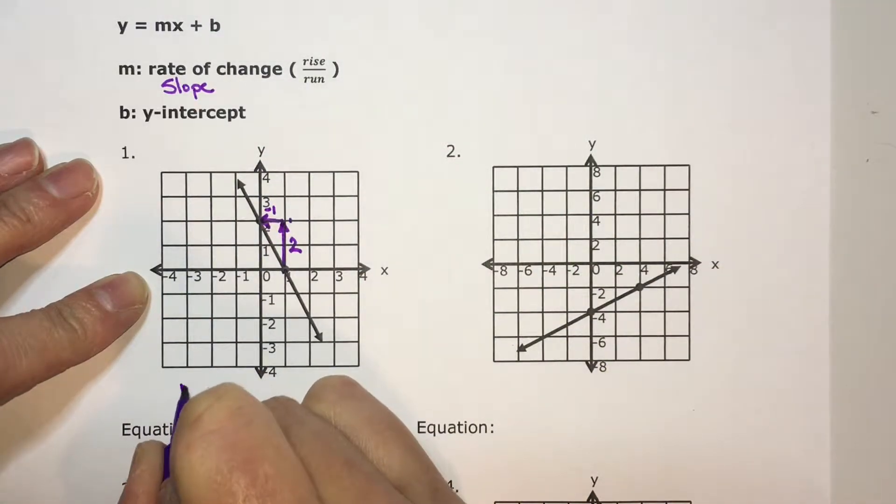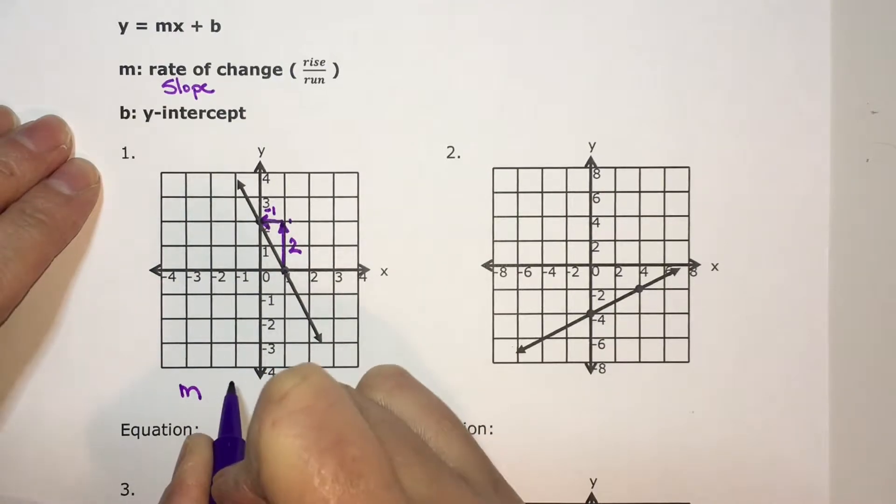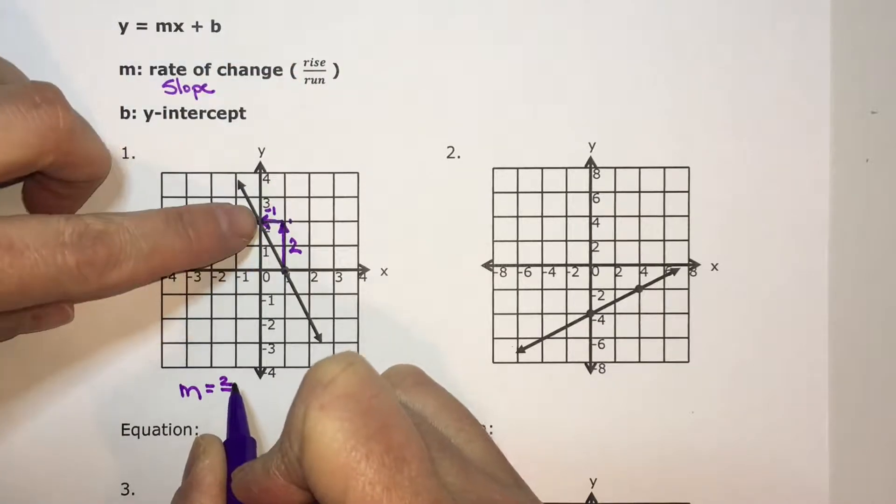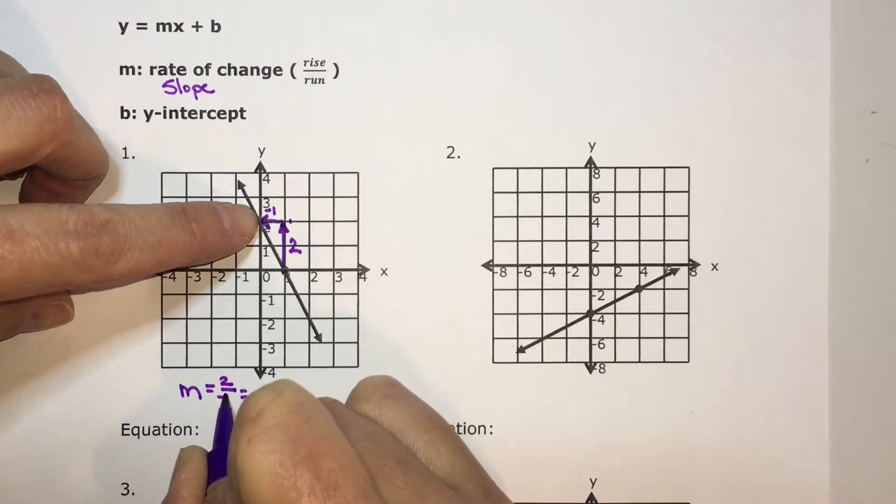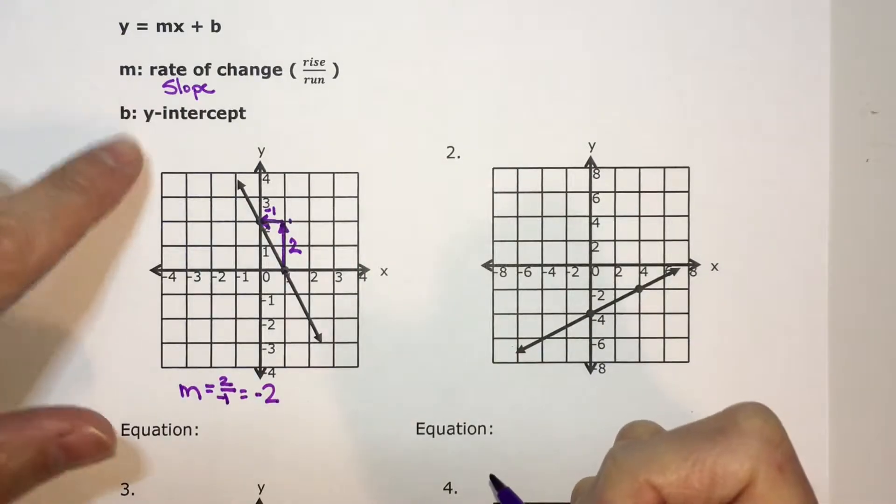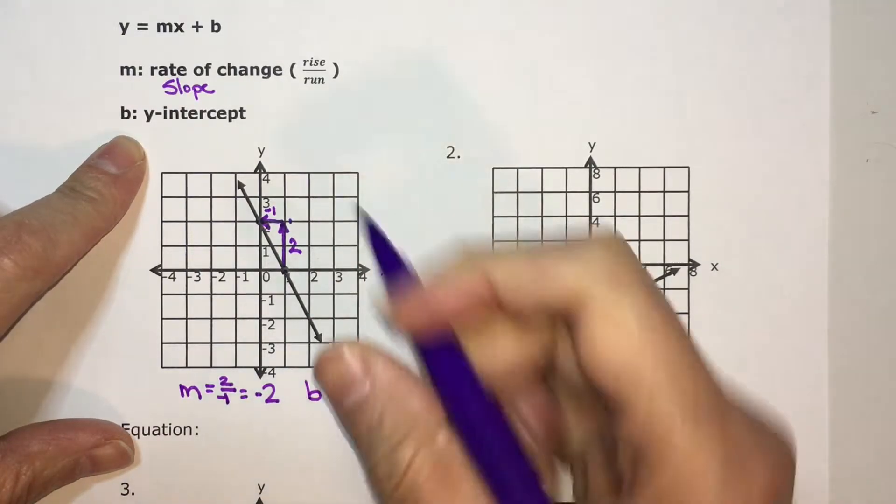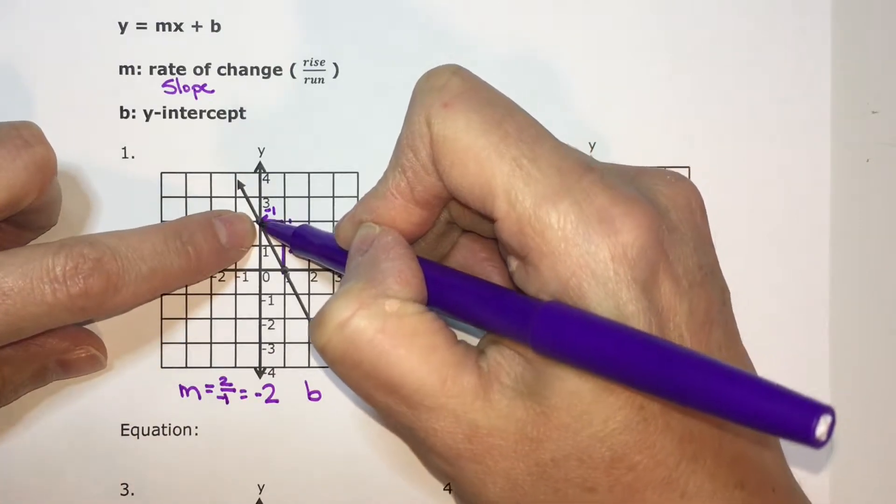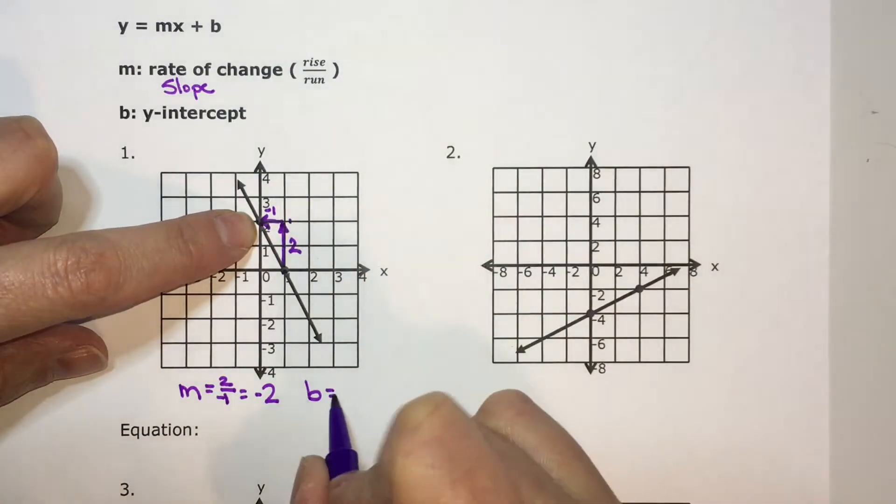So my slope, which I'm going to call m, my rise was two and my run was negative one. So I'm going to reduce this. Two divided by negative one is negative two. And my y-intercept, it's just the point where your graph crosses the y-axis. It crosses right here, which is positive two.